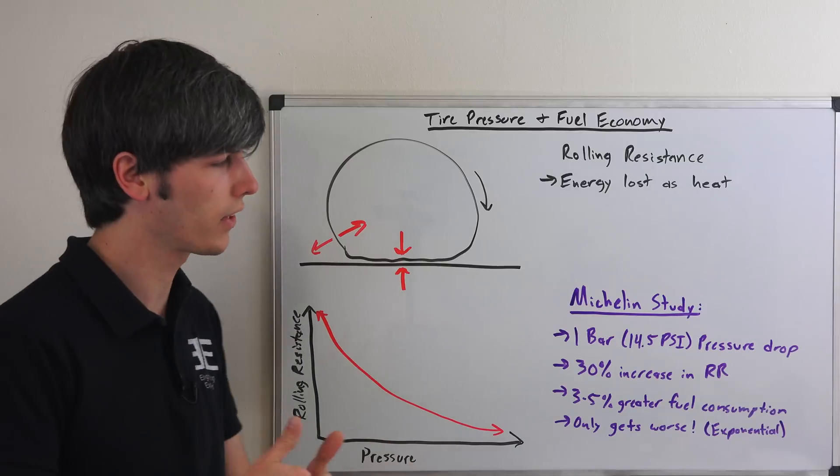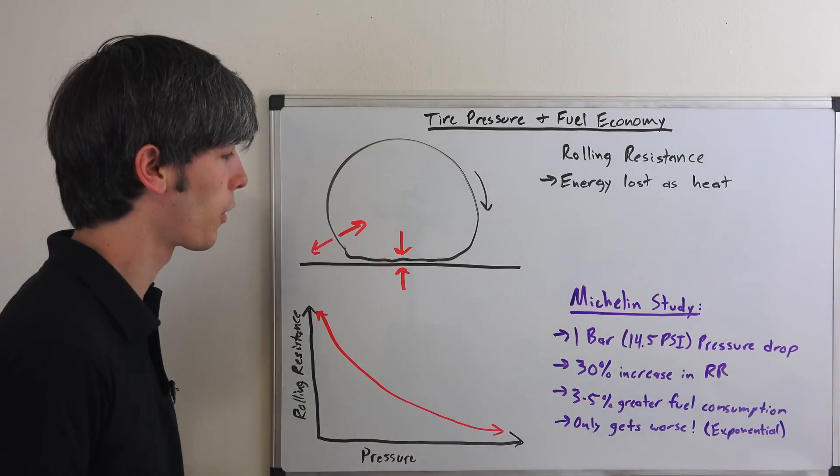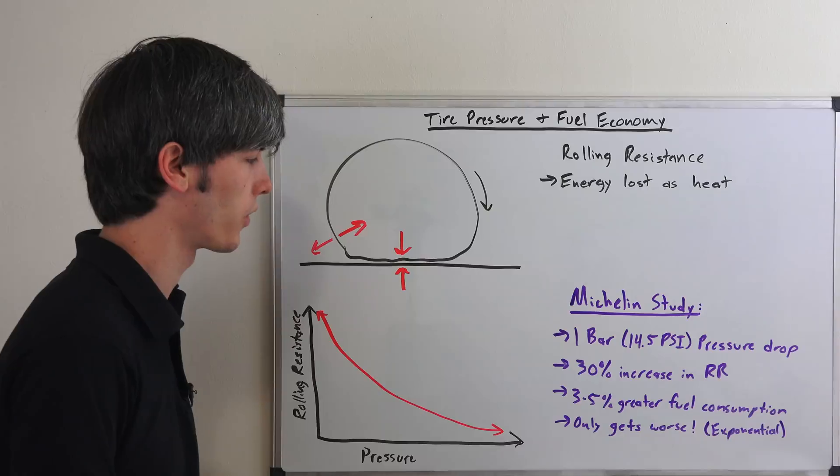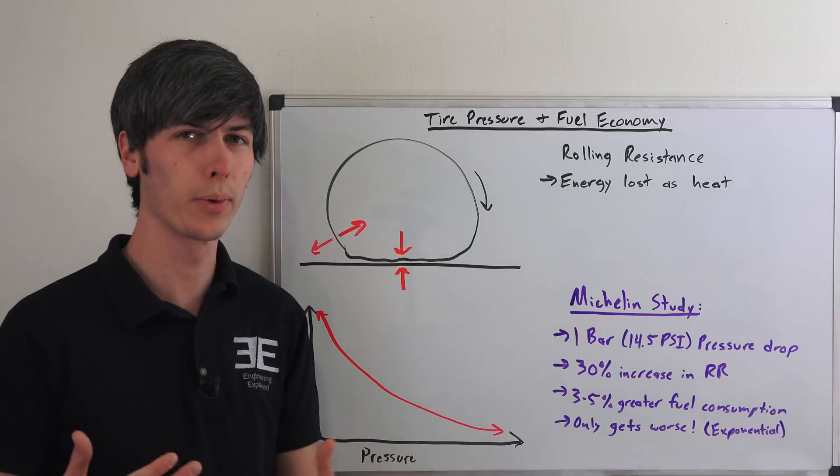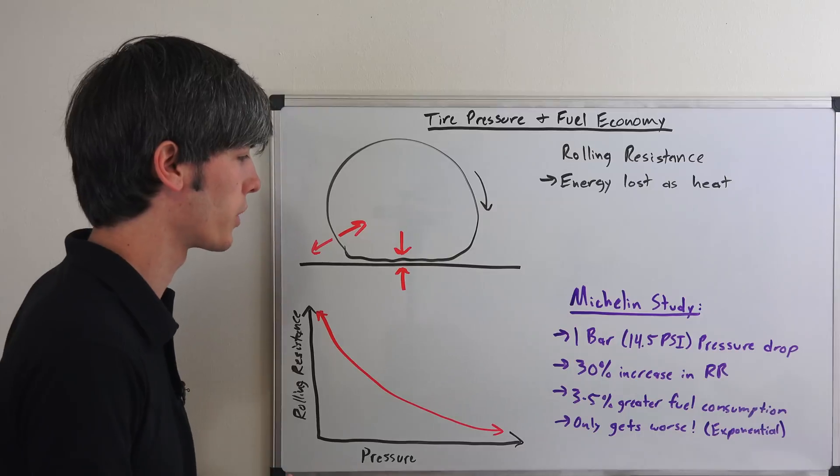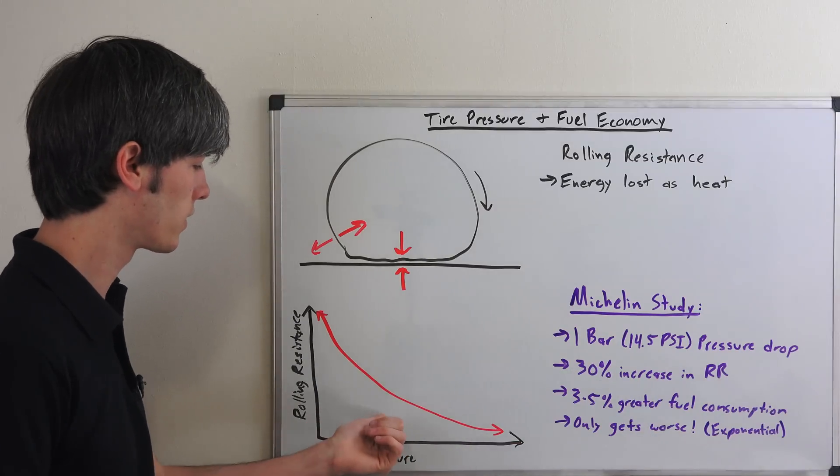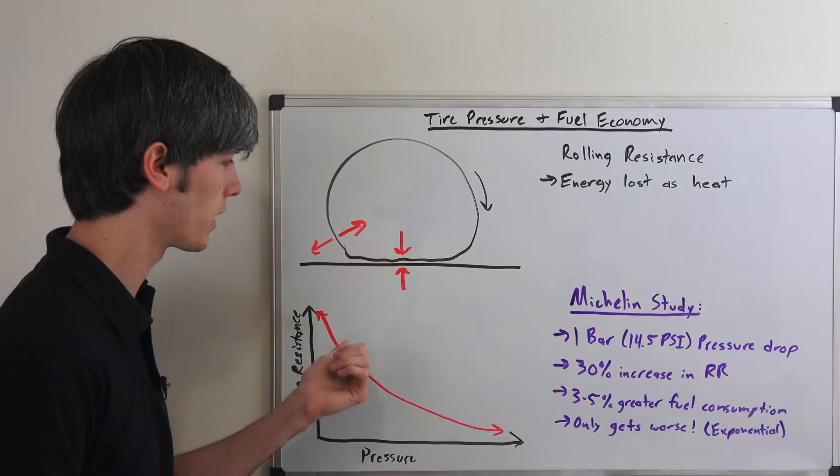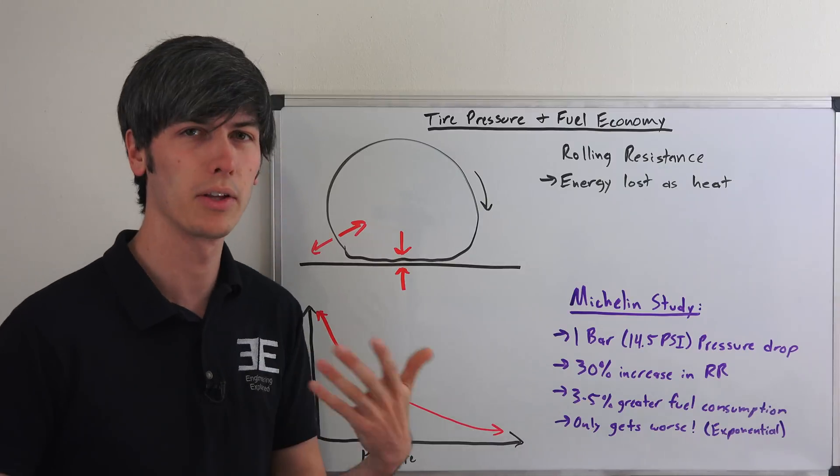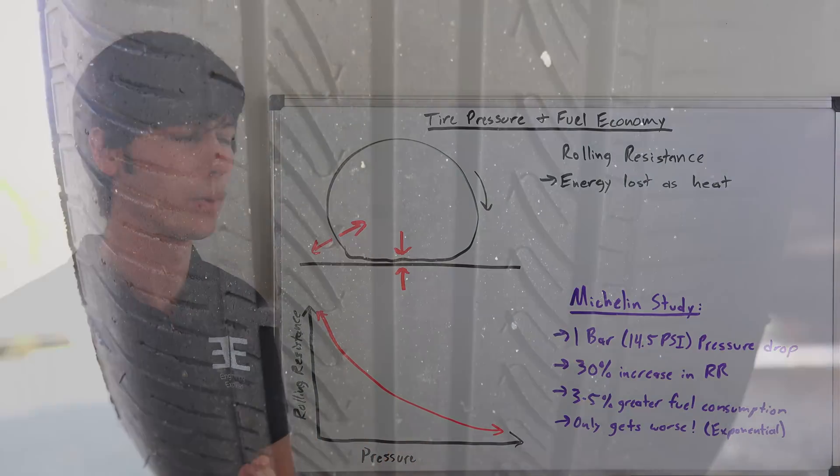So, Michelin did a study, and they reduced the tire pressure of a tire by one bar, or 14.5 psi, from what the manufacturer had set it at, and they noticed a 30% increase in the rolling resistance, and this equates to about a 3-5% greater amount of fuel consumption. And, as I mentioned, this only gets worse. So, as you keep continuing to decrease pressure, you exponentially gain rolling resistance, and that means you exponentially gain how much fuel consumption you're going to have.